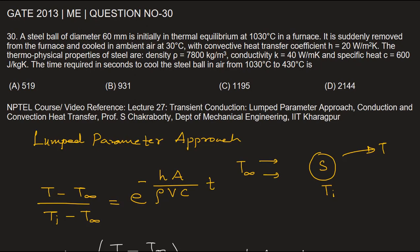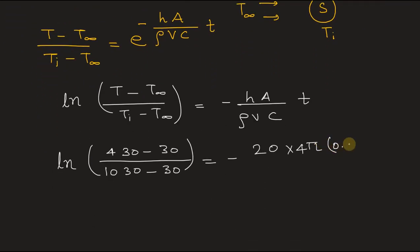R² whole divided by the density of steel, that is 7800 multiplied by volume. Volume is 4/3 πR³, 4/3 πR³ 0.03 cube into time.